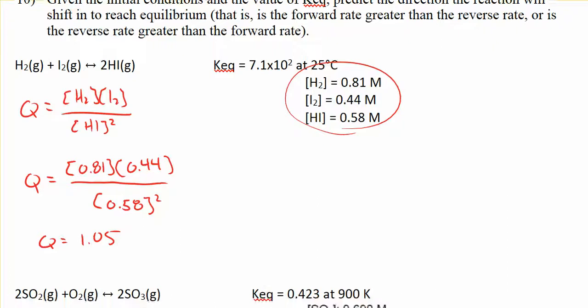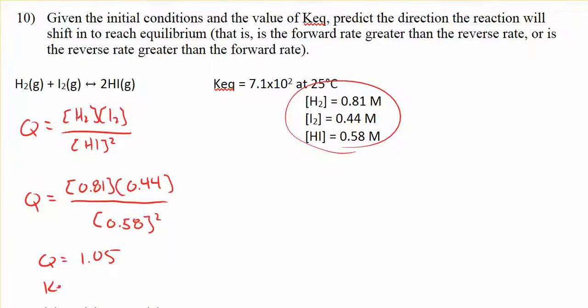I can compare that against my Keq, which here is given as 7.1 times 10 to the 2. So looking at those two values, Q is much smaller than Keq. One way we can interpret that, or therefore...